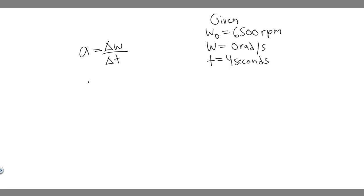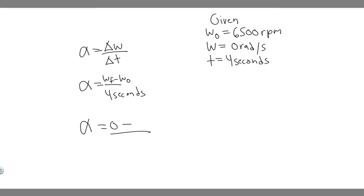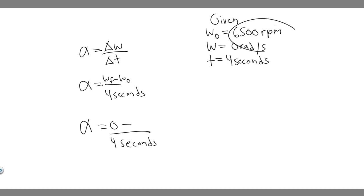When we solve, the change in time is 4 seconds. The change in omega is omega final minus omega initial. The final angular velocity minus the initial angular velocity. The final is 0, so we get 0 minus the initial, over 4 seconds. Since the time is in seconds, we need to rewrite the RPM in radians per second — so we have to convert first.